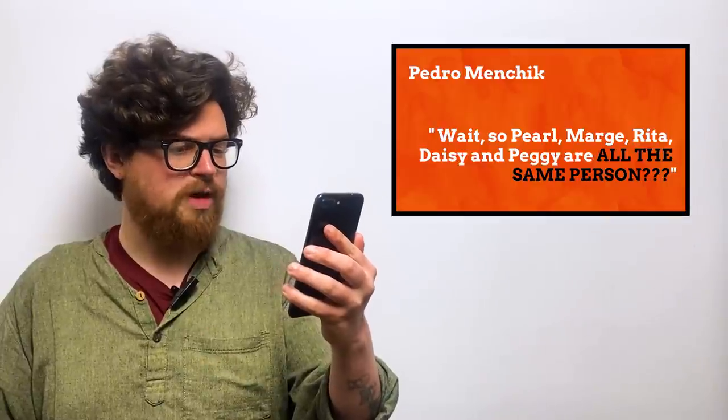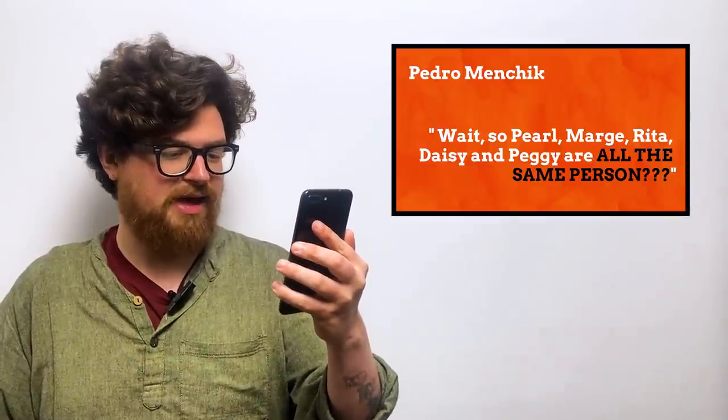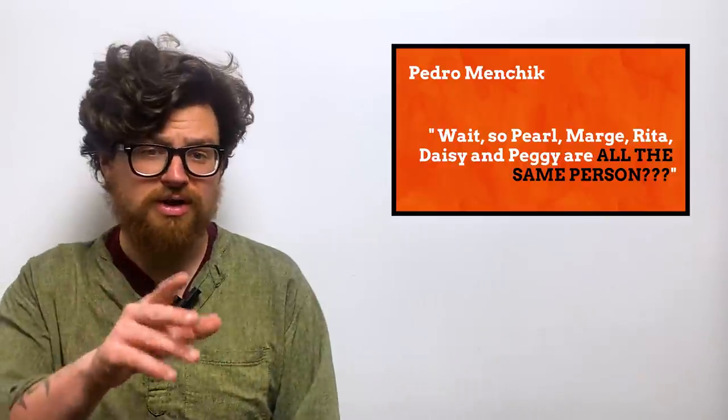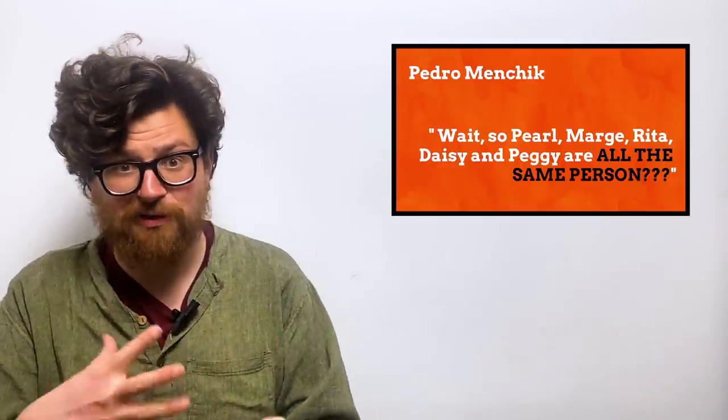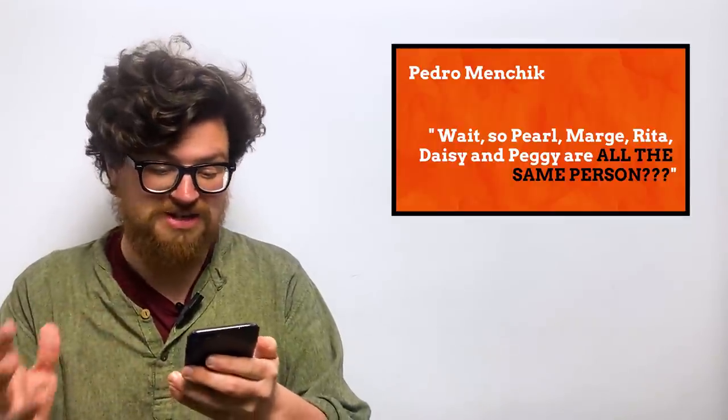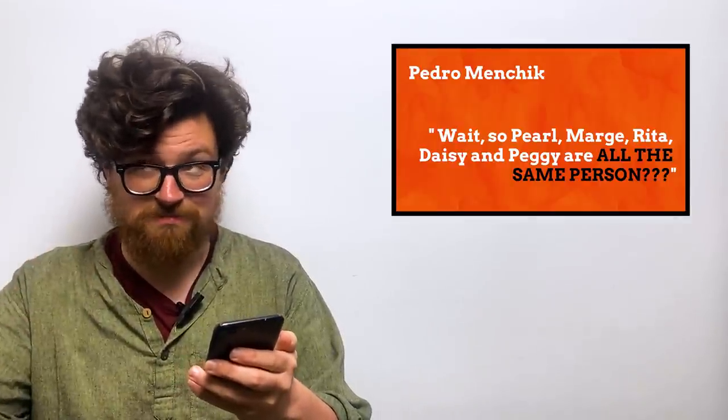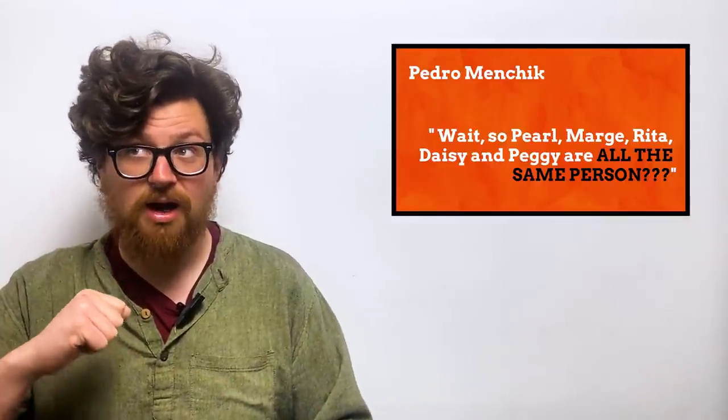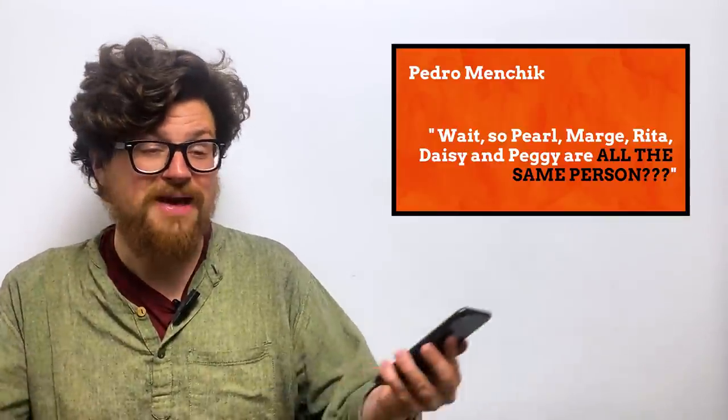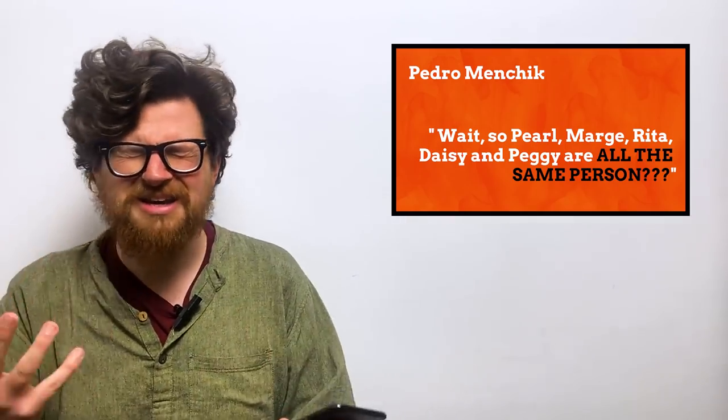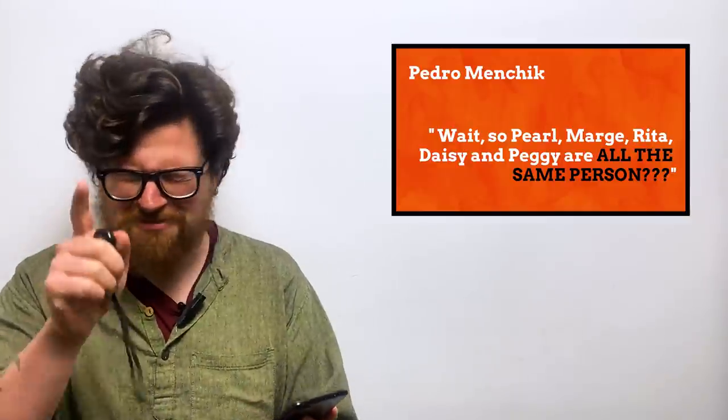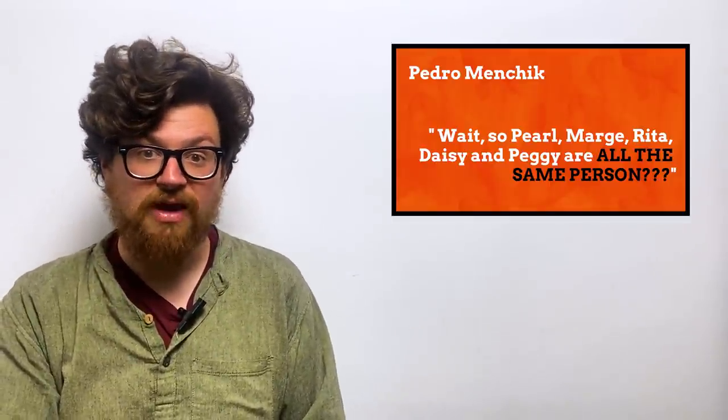Pedro Menchik said, 'Wait, so Pearl, Marge, Rita, Daisy, and Peggy are all the same person? You are done, right?' In regards to the name Marge, Marge is also a shortening of Margaret - I mentioned it was Marjorie, but Marge is also another shortening of Margaret as well. Peggy Schuyler, Marge Simpson, Lovely Rita from the Beatles song, Daisy from Super Mario - Princess Daisy - and Peggy. Pearl from Krusty Krab, Pearl from SpongeBob SquarePants, and Peggy from Hamilton - all the same person. Gosh, I think most other people would do another take of that. Not this guy, let's move on.